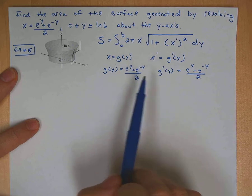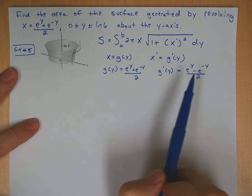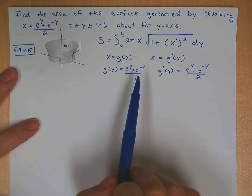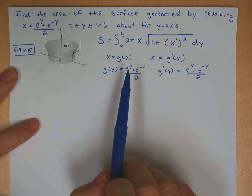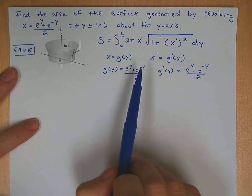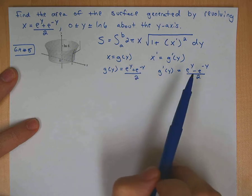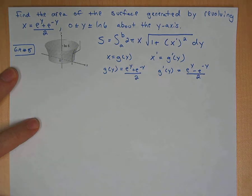And your g prime of y, this is just the derivative. Forget the 2 on bottom, just derivative of e to the y is e to the y. Derivative of e to the negative y is negative e to the negative y. The 2 is constant, so it stays down there.